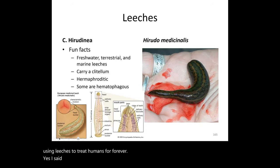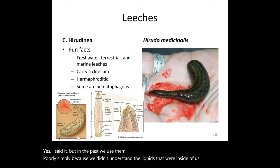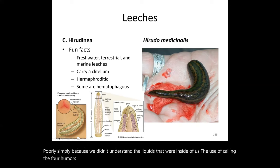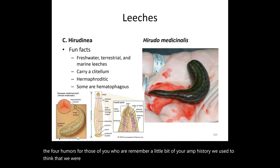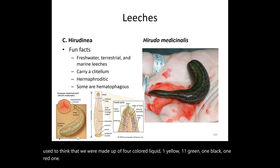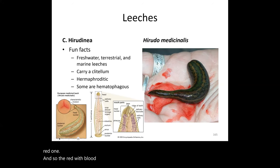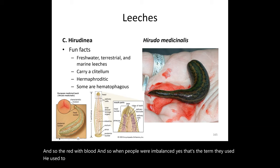In the past, leeches were used poorly because we didn't understand the fluids inside us. People believed in the four humors — four colored liquids: yellow bile, green bile, black bile, and blood (the red one). When people were thought to be imbalanced, leeches were used to suck out some of that blood.